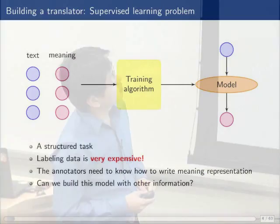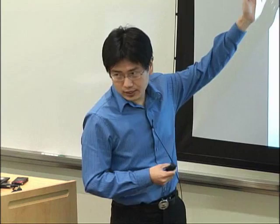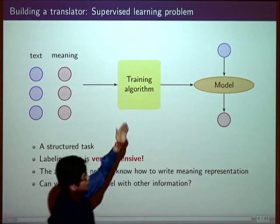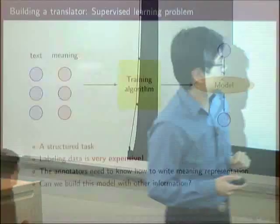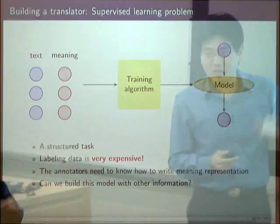How do we do that? The usual way is to build a supervised learning model. In training time, you have many pairs of text and meaning representations. You hire annotators to label human requests with corresponding meaning representations, collect many such pairs, feed this training data into the training algorithm, obtain a model, and then in testing time, when you see a human request, you can translate it into some meaning representations.